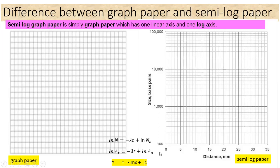This completes the first cycle. The second cycle starts with a baseline of 1,000, and the lines go to multiples of 1,000: 2,000, 3,000, 4,000, 5,000, 6,000, 7,000, 8,000, 9,000, and 10,000. And similarly above that.